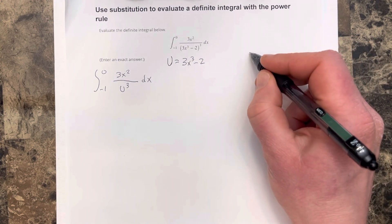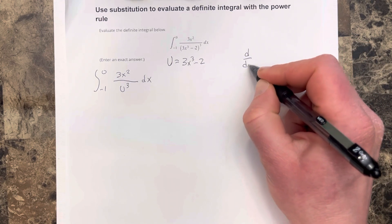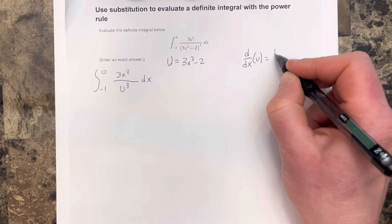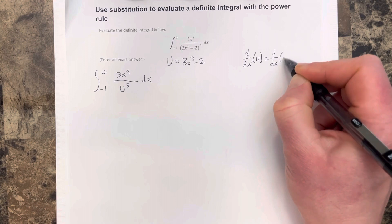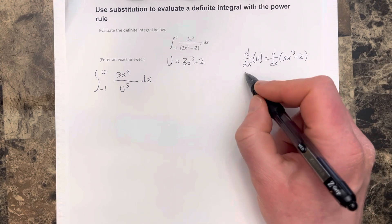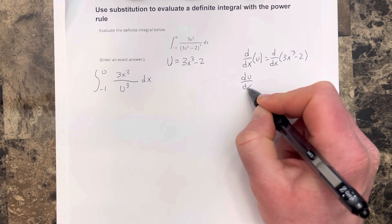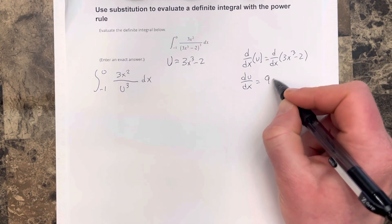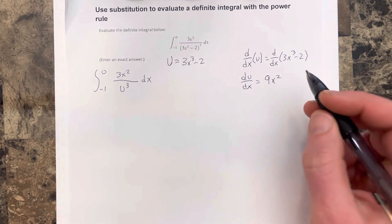And then out here, I'm going to take the derivative of u and the derivative of 3x cubed minus 2. The derivative of u is du over dx. Derivative of 3x cubed would be 9x squared. Derivative of negative 2 is 0.